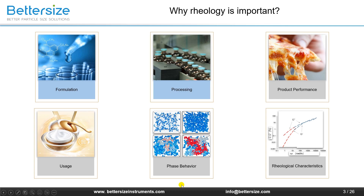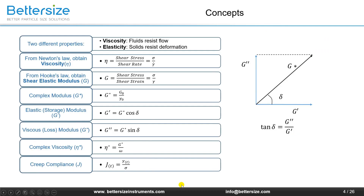Let's start with some fundamental rheological concepts. We need to discuss two different properties of materials. The first is viscosity, defined as the ability of a fluid to resist flow, described by Newton's law of viscosity, which calculates viscosity as the ratio of shear stress to shear strain rate. The second is elasticity, defined as the intrinsic ability of a solid to resist deformation. The degree to which a material can resist deformation is defined by Hooke's law, which states that the elastic strength of a material is the elastic modulus, equal to the ratio of shear stress to shear strain.